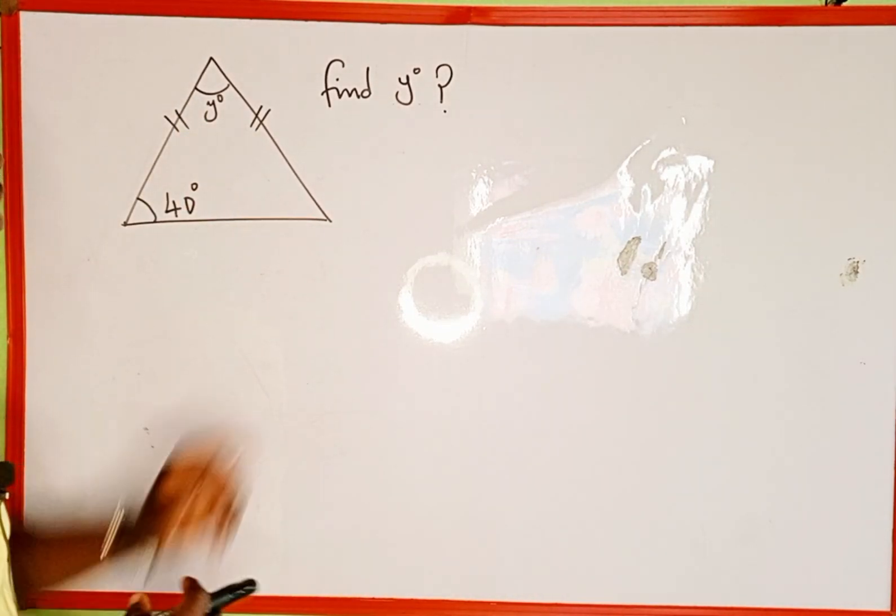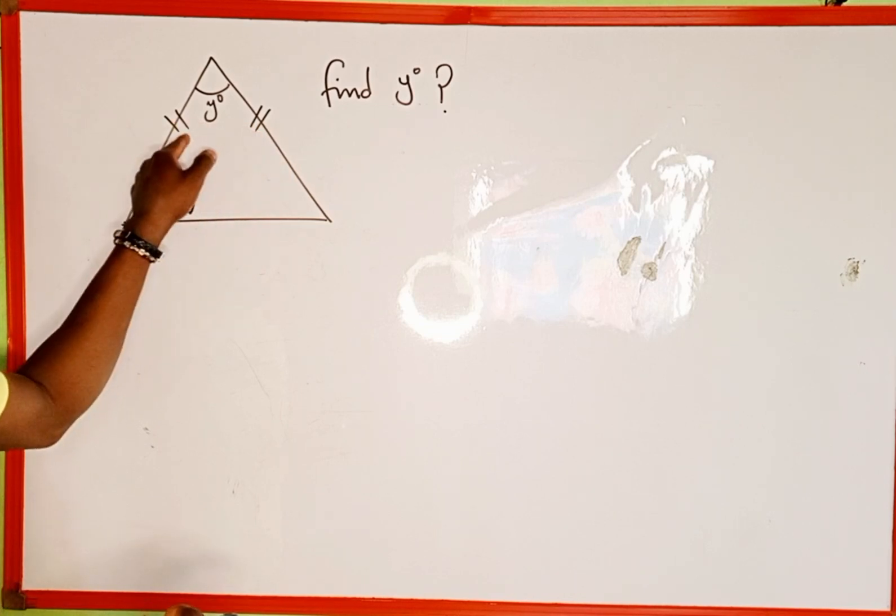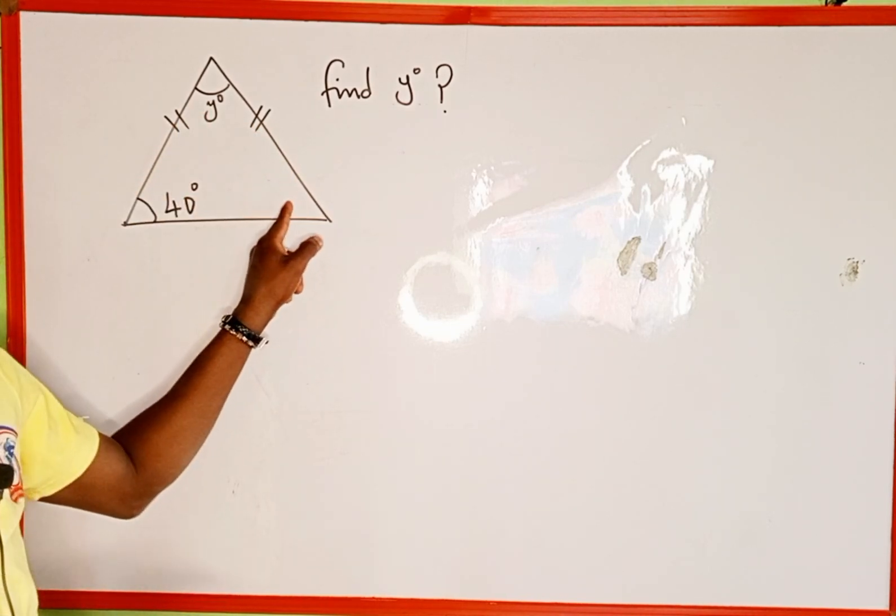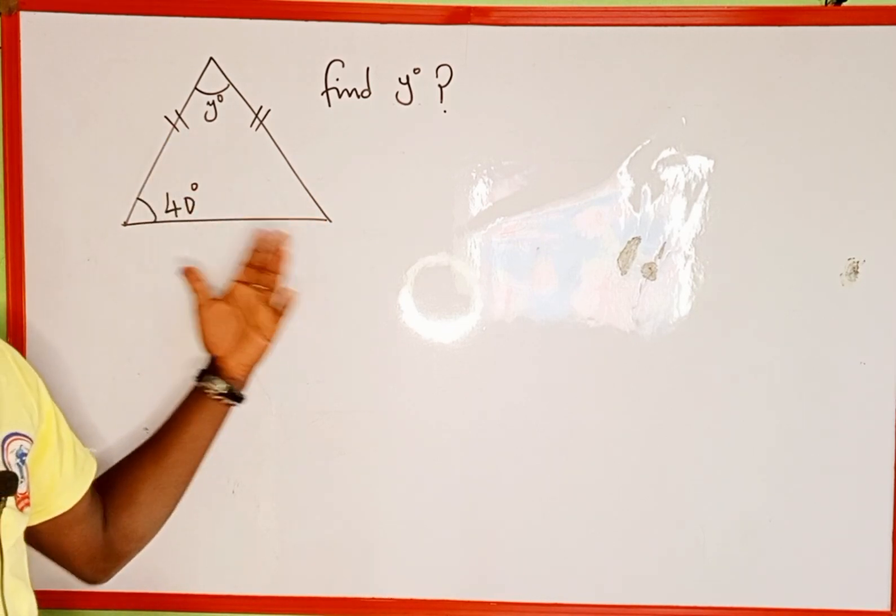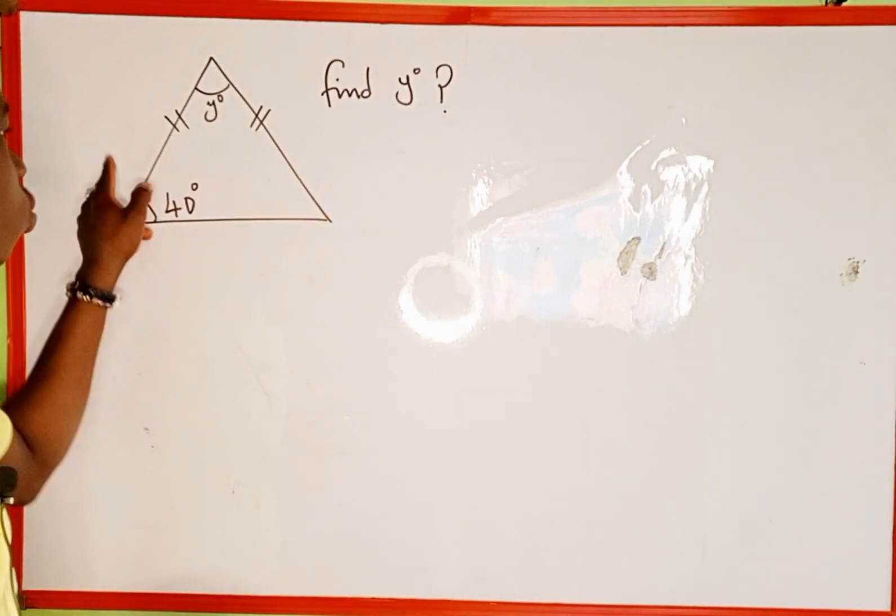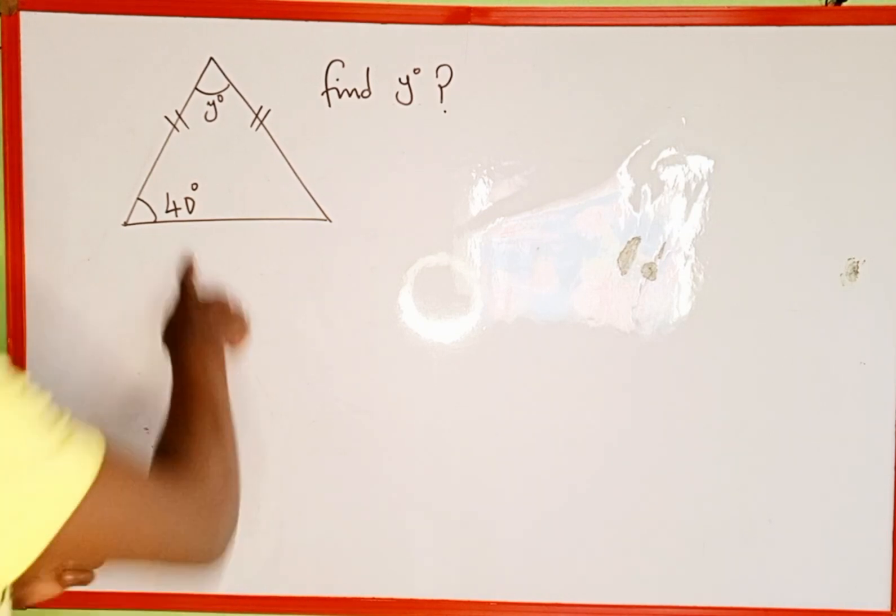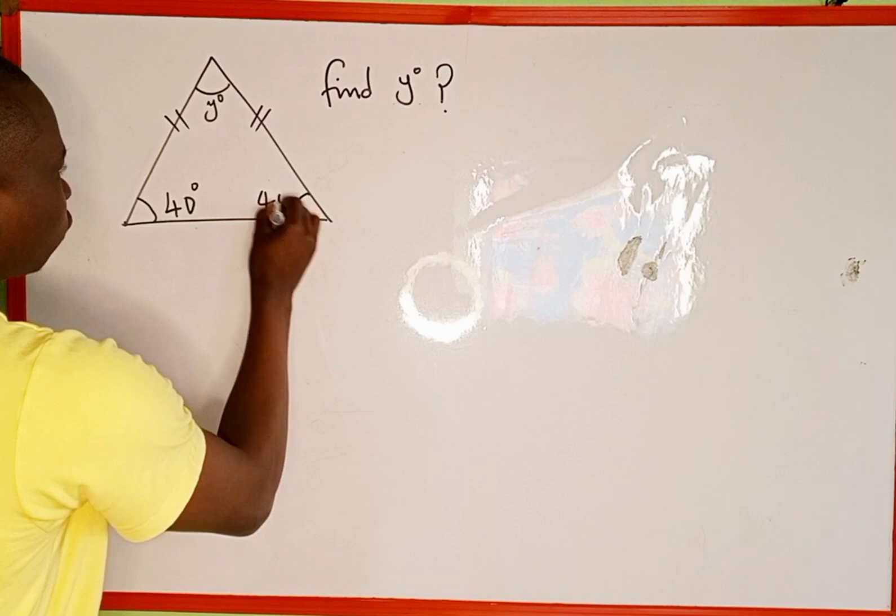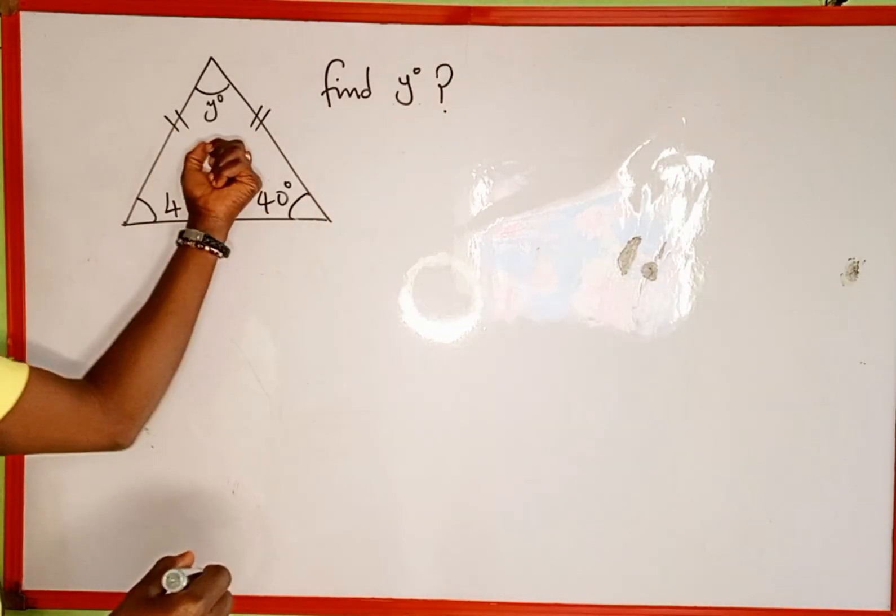The first thing we're going to notice is that these two sketch marks you are seeing here imply that the angle here is equal to the angle here. This means that this triangle is called an isosceles triangle because the two sides are equal. So if here is 40 degrees then that means this is the same as 40 degrees because of these two sketch marks.